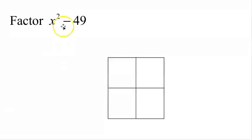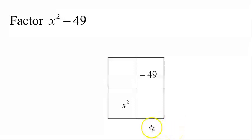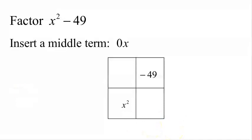The first term goes in the lower left-hand corner, so x squared goes here. Negative 49 goes in the upper right-hand corner. I need the middle term out here, but there is no middle term. I'm going to insert one — the middle term can be thought of as 0 or 0x.